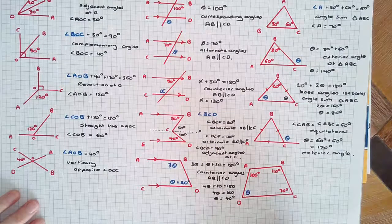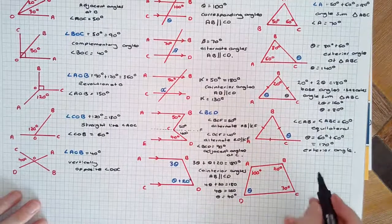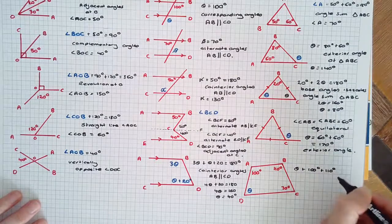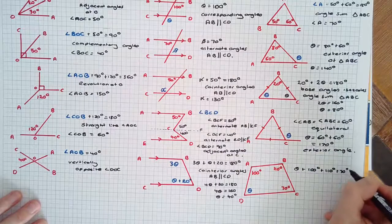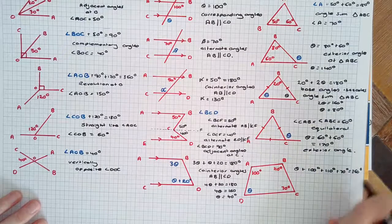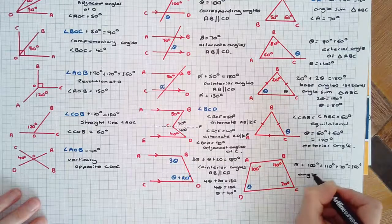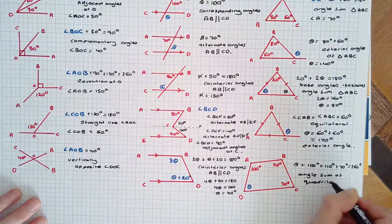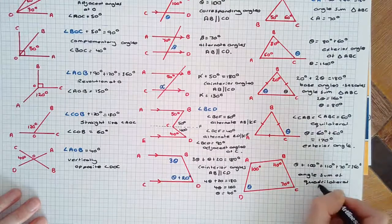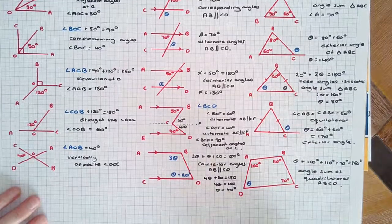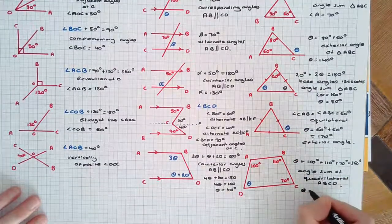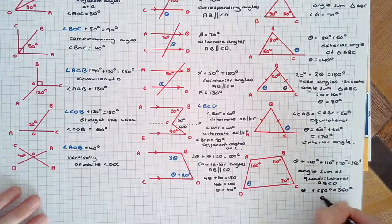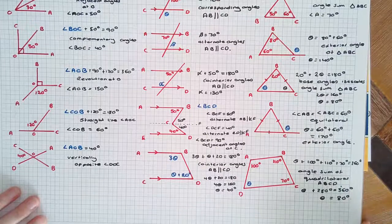Theta plus 100 plus 110 plus 70 equals 360 degrees because of the angle sum of quadrilateral ABCD. Therefore, solving this equation, theta plus 280 degrees equals 360 degrees, leaving theta equal to 80 degrees.